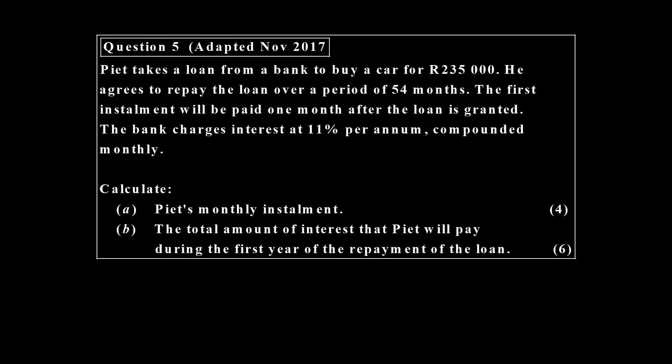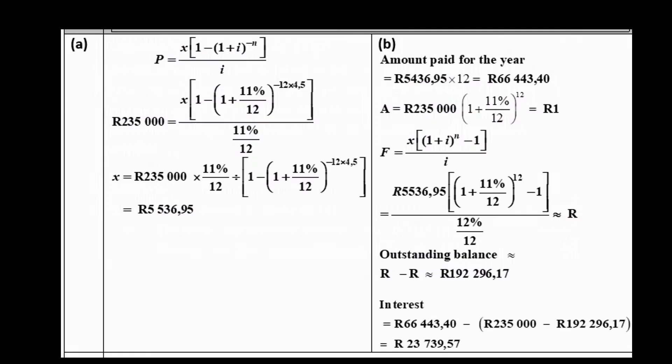And then we have one more question — question number five that comes from November 2017. There we have two questions, and there are the solutions to the two questions.